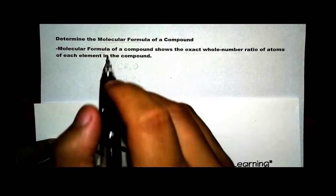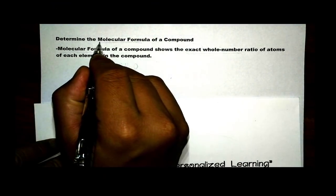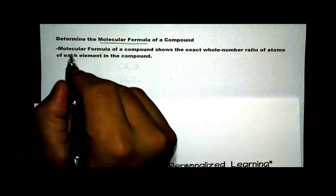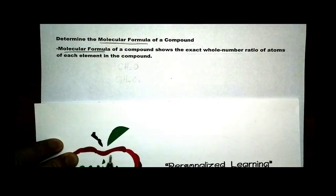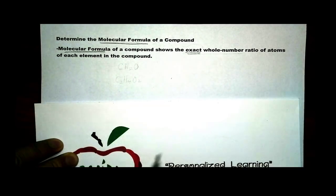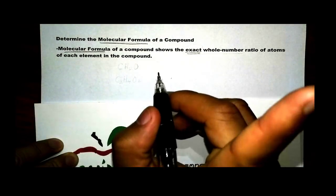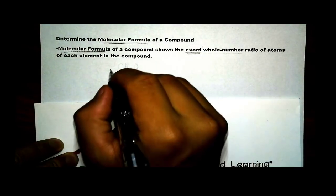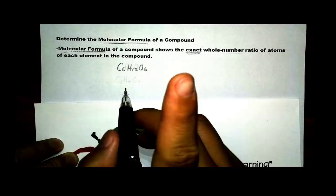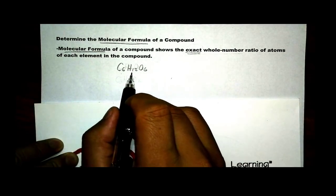In this lesson we are going to learn about how to determine the molecular formula of a compound. A molecular formula of a compound shows the exact whole number ratios of atoms of each element in the compound. For instance, if we look at glucose, which is C₆H₁₂O₆, it would have 6 carbon, 12 hydrogen, and 6 oxygen.